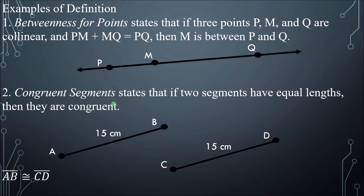Next is congruent segments. If two segments have equal lengths — for example, AB is 15 centimeters and CB is also 15 centimeters — then they have equal lengths, and AB is congruent to CB. So AB and CB are congruent segments. That is the definition of congruent segments.